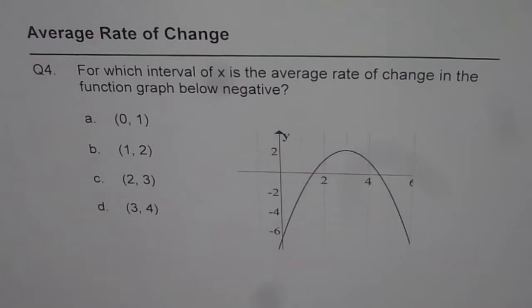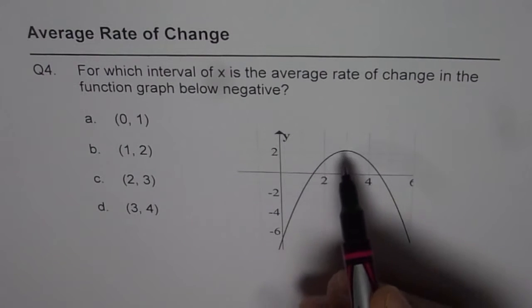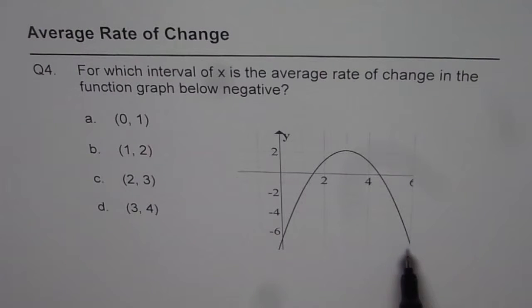I am Anil Kumar and here is question number 4 on average rate of change. For which interval of x is the average rate of change in the function graph below negative? We are given 4 choices and the graph is a parabola opening downwards.